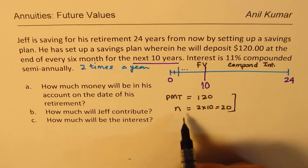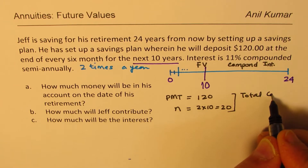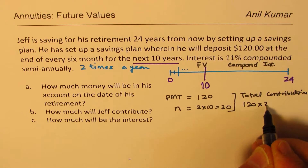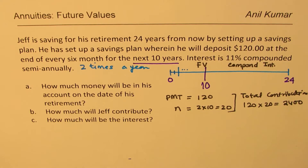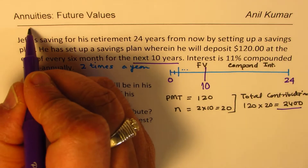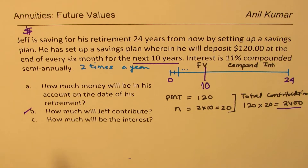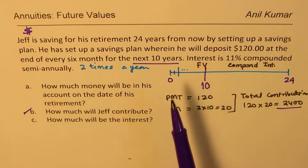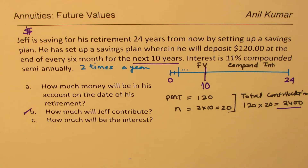Therefore, Jeff's total contribution is 120 times 20, which is $2,400. All amounts are in dollars. So we've answered Part B — his contribution is $2,400. Now we need to figure out how much money will be in his account on the date of retirement, so we apply the future value formula to find the amount after 10 years.